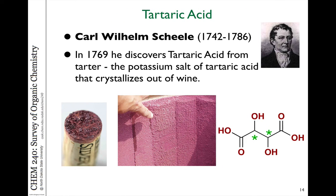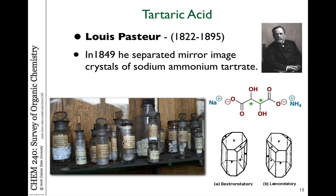In the 18th century, tartaric acid — which is an interesting molecule — was isolated from the sediments from red wine. These are the crystals that form because tartaric acid is naturally occurring in grapes. You'll notice tartaric acid has two stereogenic carbons associated with it. Louis Pasteur was doing research on tartaric acid and its various salts, and he discovered that the crystalline salts formed from sodium ammonium tartrate had shapes that were exact mirror images.